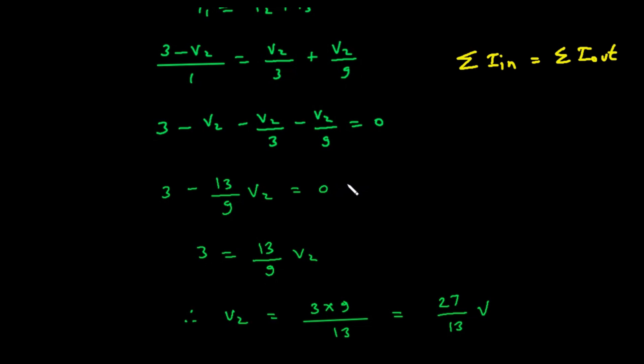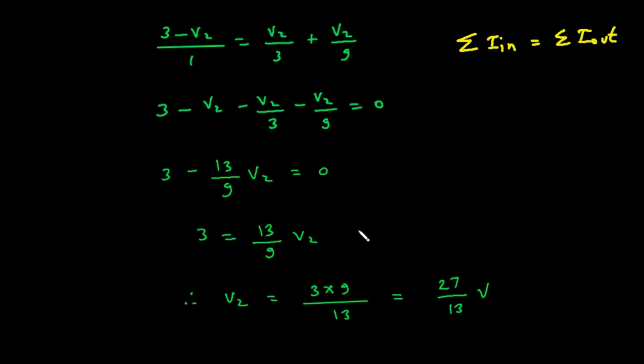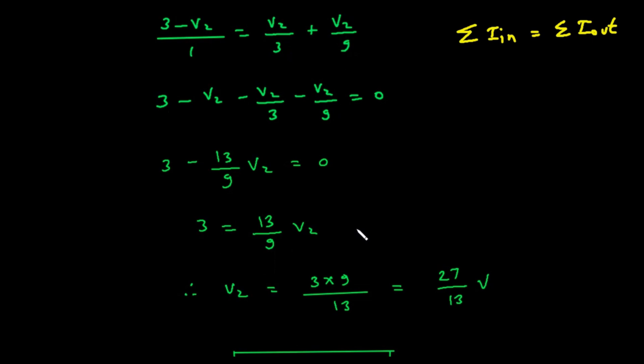V2 is the same as 9 times V2 divided by 9. V2 divided by 3 is the same as 3 times V2 divided by 9. And we already have V2 divided by 9. So, our equation becomes 3 equals 9 times V2 plus 3 times V2 plus 1 times V2, all divided by 9. Adding the terms in the numerator, 9 plus 3 plus 1 equals 13. So, 3 equals 13 times V2 divided by 9.